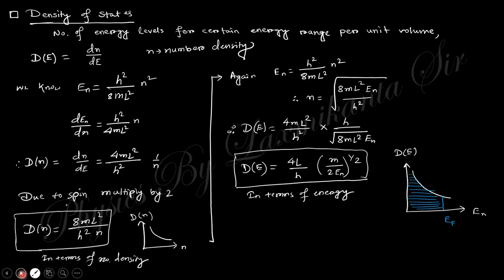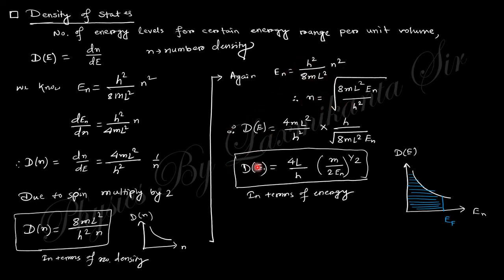Next is the density of states — the number of states occupied within an energy gap per unit volume. The energy expression is differentiated to get dN by dE. Since there are two spin states, we multiply by 2. Using the relation for N, we obtain the density of states expression. Note that as the energy value decreases, the density of states increases.